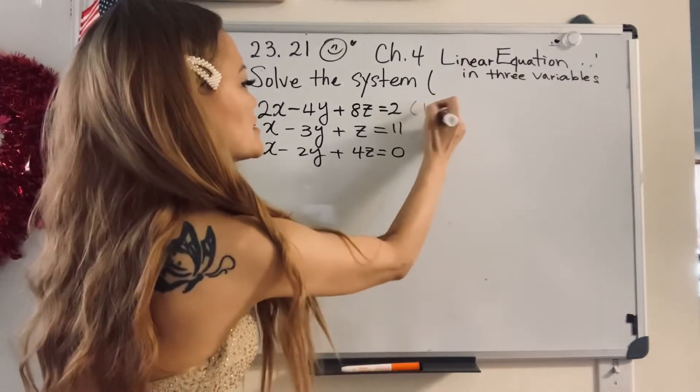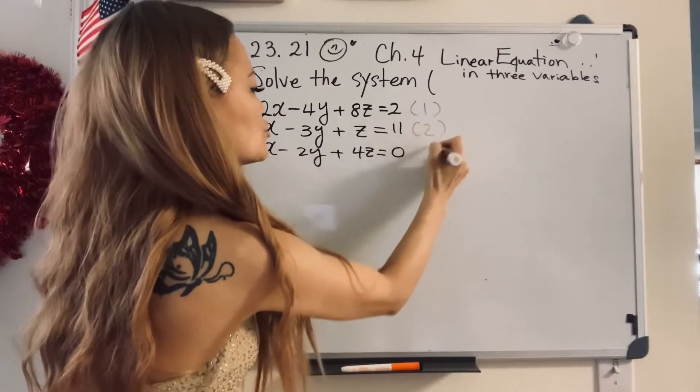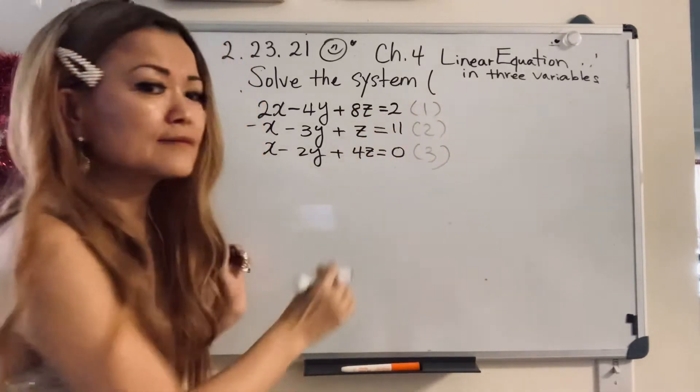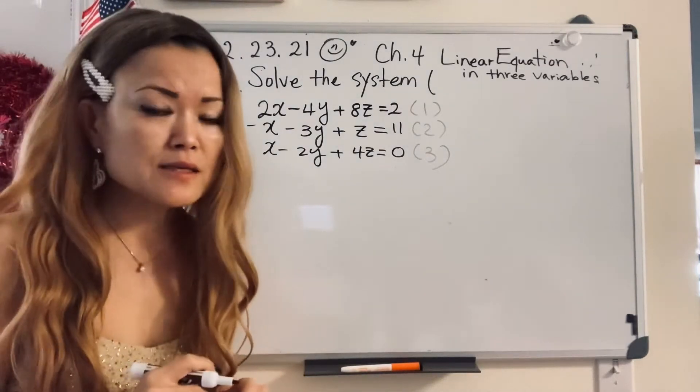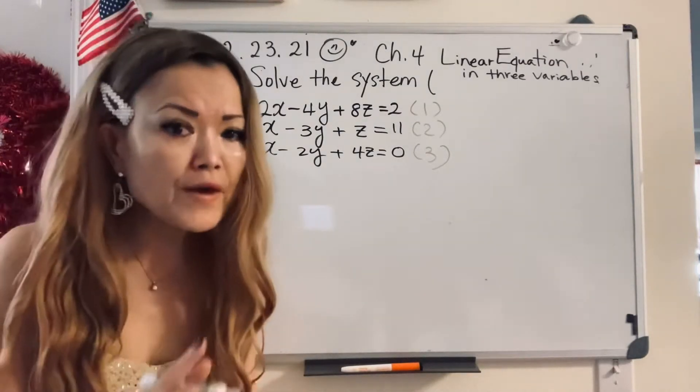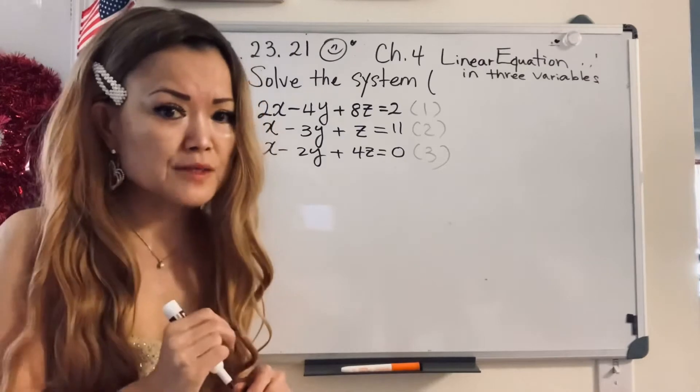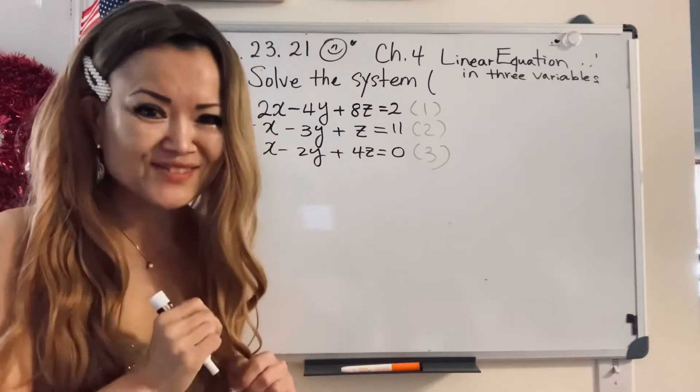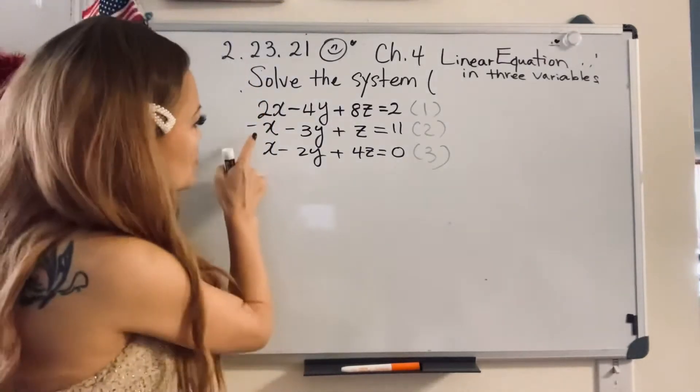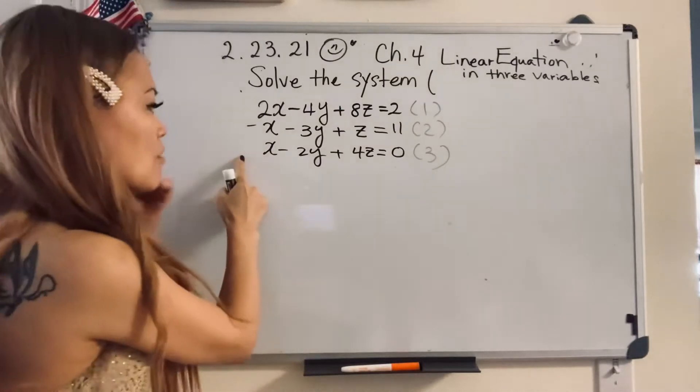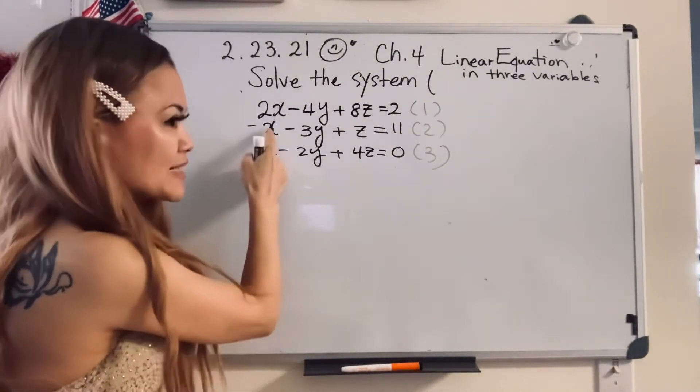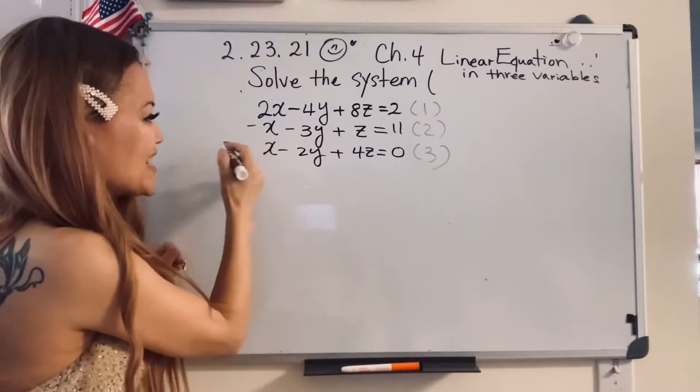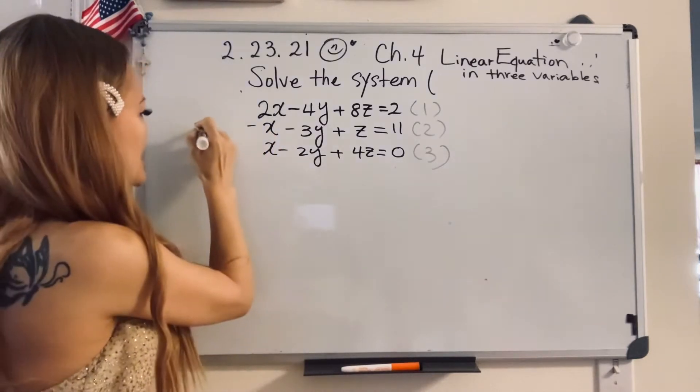So let's say this is equation one, here two, three. Now, do you remember? You need to eliminate the same variable two times, so we can make two variables. So now, when you look at it, two and three, wow! If I add two and three, I can eliminate the x. So let's eliminate the x.